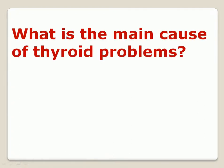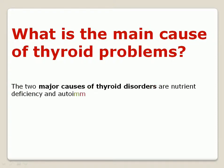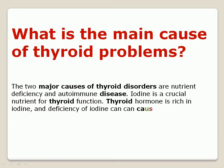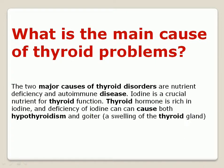What is the main cause of thyroid problems? The two major causes of thyroid disorders are nutrient deficiency and autoimmune disease. Iodine is a crucial nutrient for thyroid function. Thyroid hormone is rich in iodine, and deficiency of iodine can cause both hypothyroidism and goiter, a swelling of the thyroid gland.